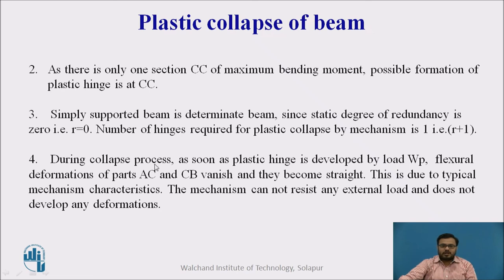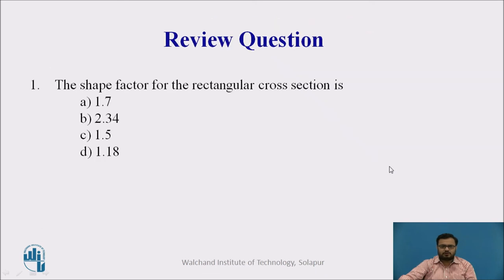During the collapse process, as soon as the plastic hinge is developed by load WP, flexural deformation of parts AC and CB vanishes and they become straight lines. This is due to typical mechanism characteristics — the mechanism cannot resist any external load and does not develop any further deformation.